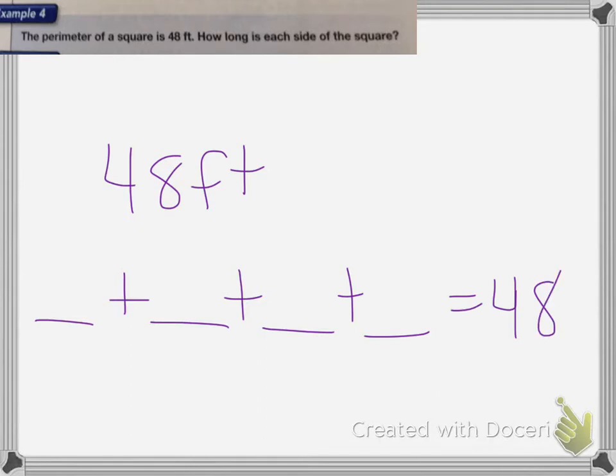Now with this problem, the perimeter of a square is 48 feet, and it wants to know how long is each side. So if I know the perimeter is 48 feet total, and squares, all the sides have to be the same length, so technically it'd be four sides added together equals 48. Now to solve this, I'm going to take my 48 feet and divide it by the number of sides in a square, which is 4. So 48 divided by 4 is 12. So this means that each side of my square is equal to 12 feet.